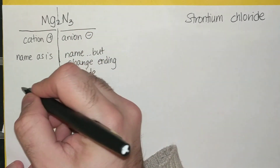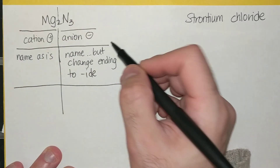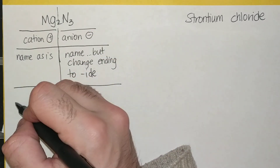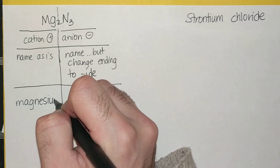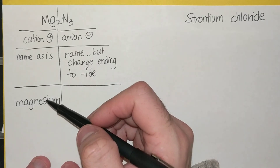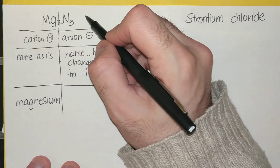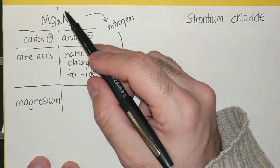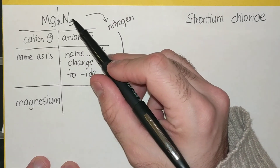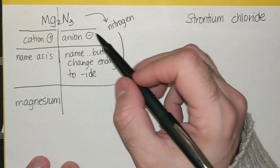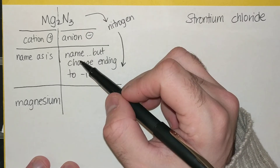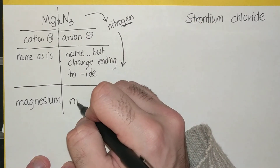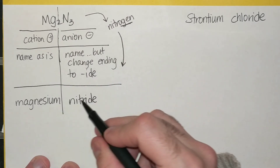So going down on these rules, on the left I have MG. If I look on a periodic table, I'm looking for the symbol MG — that is named magnesium. So left side is magnesium. If I look on the periodic table, N is nitrogen, but when I name it in a compound, since it's on the right side, it is an anion. And so on the right side, I change the ending to IDE. So the whole ending becomes IDE. So the name of this compound would be magnesium nitride.